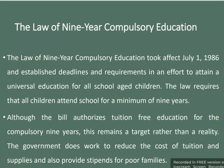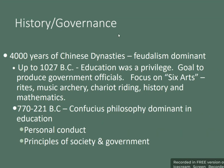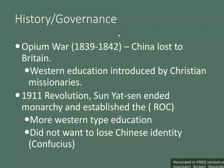About the history and governance of China: there are 4,000 years of Chinese dynasties, with feudalism dominant up to 1027 BCE. Education was only a privilege aimed at producing government officials, focusing on six arts. From 770 to 221 BCE, Confucian philosophy dominated education, focusing on personal conduct and principles of society and government. During the Opium War of 1839 to 1842, China lost to Britain and Western education was introduced by Christian missionaries. In the 1911 revolution, Sun Yat-sen ended the monarchy and established the ROC, adopting a more Western type of education while not wanting to lose Chinese identity.